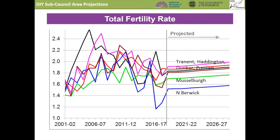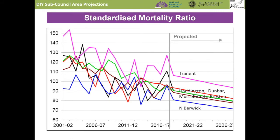A similar picture is seen for mortality. It has generally been decreasing since the turn of the century, though more slowly recently, and is assumed to continue to decrease in the future because that is what is expected nationally. But the assumptions for the future use the knowledge gained from the training projection that, for example, Tranent has higher mortality than other wards, and North Berwick lower mortality.